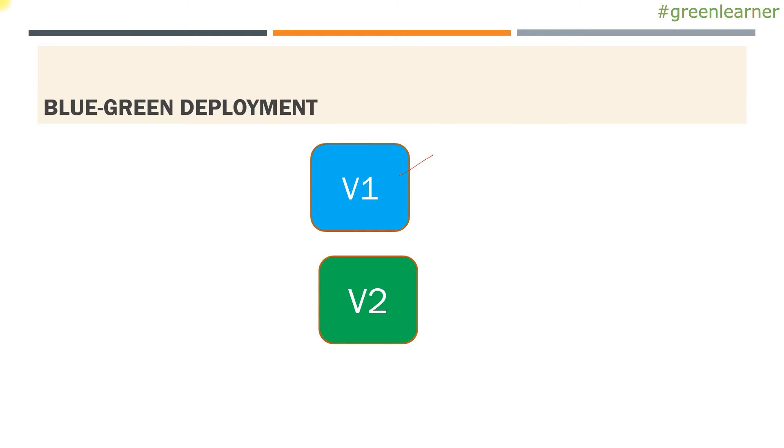This is the blue one. We are naming the blue running state and it is in production. And after changes, after adding some new features, you have this version 2 to be deployed in the production.